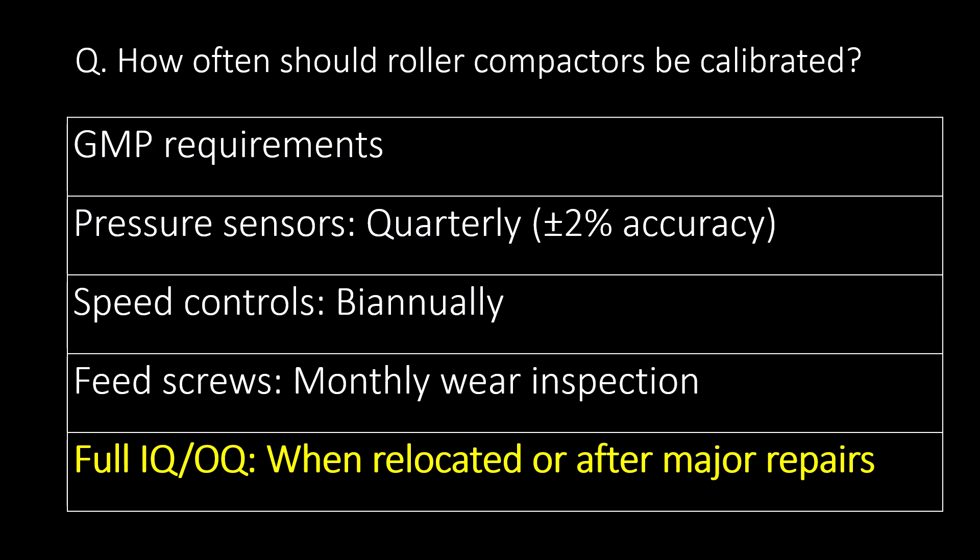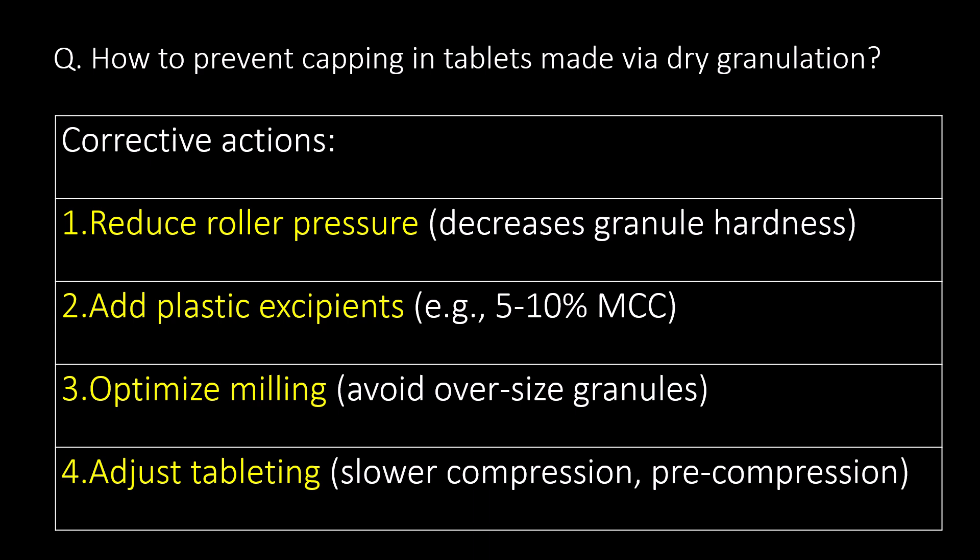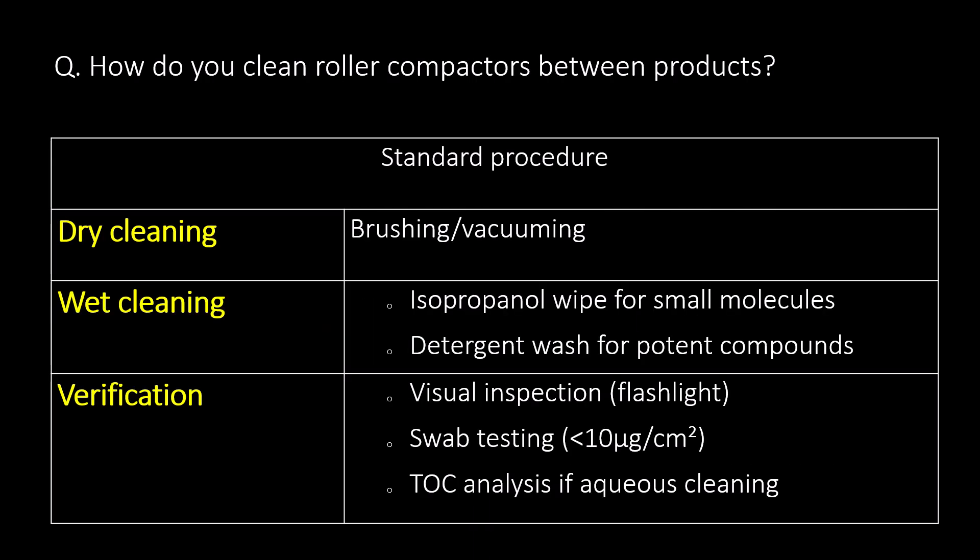How often should roller compactors be calibrated? Pressure sensors: quarterly. Speed controls: biannually. Feed screws: monthly wear inspections. Full IQ/PQ when relocated or after major repairs. How to prevent capping in tablets made via dry granulation? Reduce roller pressure, use plastic excipients, optimize milling, and adjust tableting parameters. For cleaning roller compactors between products, the standard procedure includes dry cleaning, wet cleaning, and verification by visual inspection, swab testing, or TOC analysis if aqueous cleaning is used.